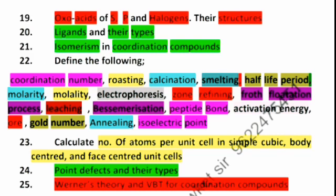Next is point defects and their types, particularly Schottky and Frenkel defects are asked. In coordination chemistry, Werner's theory and VBT. From VBT you should be able to explain the structure of complexes. Werner's theory postulates are also important.